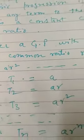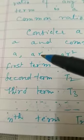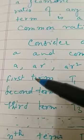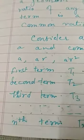Consider a GP: A, AR, AR square and so on. First term is A and second is AR. If you divide the second term by A, you get R. AR upon A is R, AR square upon AR is R. This is the common ratio.